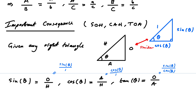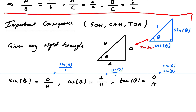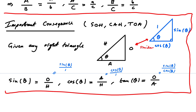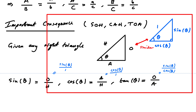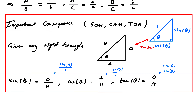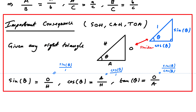Something important to understand: this is probably how many of you first saw sine, cosine, and tan, which makes sense because it's a simple idea in basic geometry. But this is an extremely restrictive approach to sine, cosine, and tan. It only really makes sense if θ is between 0 and π/2, because if θ is not in that range, you don't have a right triangle.